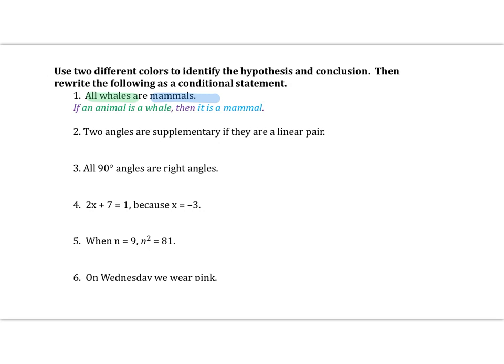Next: two angles are supplementary if they are a linear pair. This time, the hypothesis is at the end of the statement because it comes after the word 'if,' and the conclusion is actually in the front. So if we rewrite this in if-then form, we say: if two angles are a linear pair, then they are supplementary.